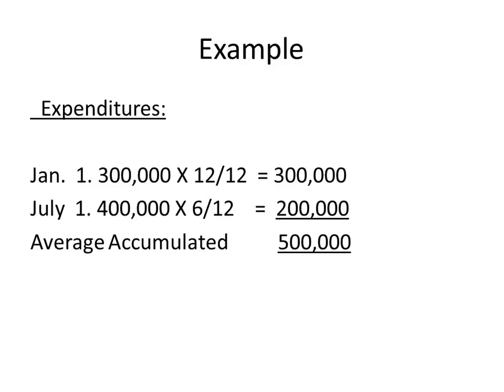Because some of it was outstanding for the whole year. Some of it was outstanding for only six months. And this can go on and on. You could do this every single month. This is a very simple example. What's my average accumulated expenditures? This is the average that I spent.